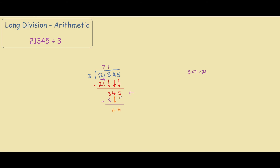Again bringing it down, our focus is now on 45. We look up here and say how many times can 4 be divided by 3. It can be divided by 3 one time, because 3 times 1 equals 3. We're left with 3 down here, and if we subtract, we get 4 minus 3 is 1. Then we bring down the 5.